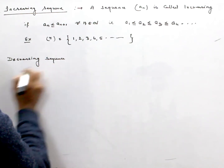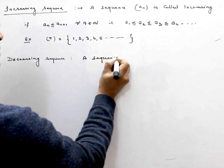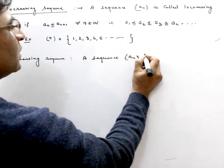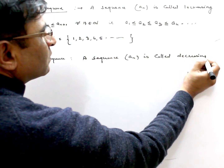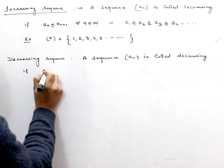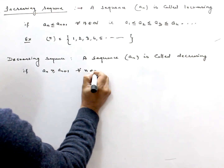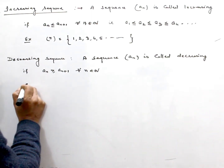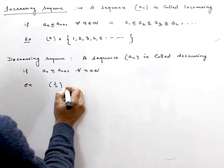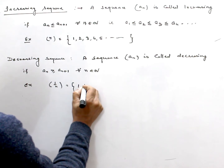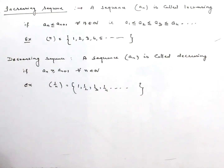A decreasing sequence: a sequence a_n is called decreasing if a_n is greater than or equal to a_{n+1} for all n belonging to the natural numbers. An example is the sequence 1/n, where the terms are 1, 1/2, 1/3, 1/4, and so on. This sequence is decreasing.